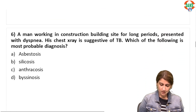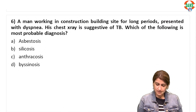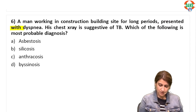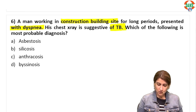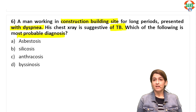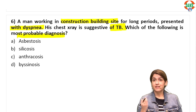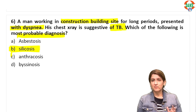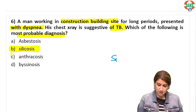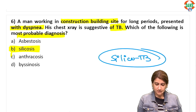A man working at a construction building site for long periods presents with dyspnea. His chest X-ray is suggestive of tuberculosis. Construction building workers have high chances of silicosis, and silicosis patients have a high risk of TB. When a patient has both TB and silicosis together, this is referred to as silicotuberculosis. The correct answer is silicosis.